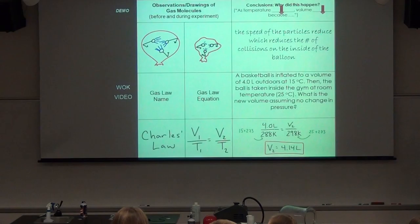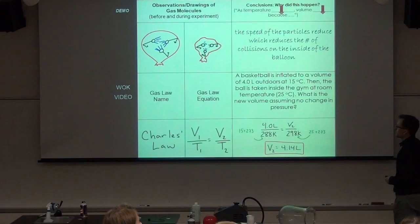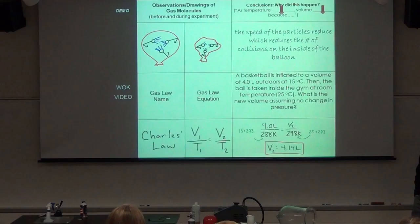Before the product had to be the same. So if one got bigger, the other got smaller. Now they're both changing in the same way. So the ratio is going to be a constant. If it's twice as big, it's because it's twice as high. So that's how we do Charles Law.